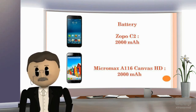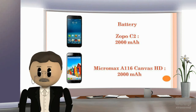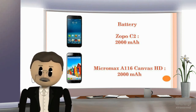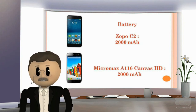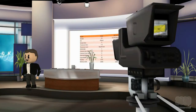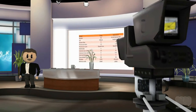Battery of the Zopo C2 is 2000 mAh, and the battery of the Micromax A116 Canvas HD is also 2000 mAh.